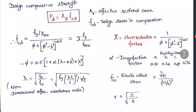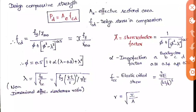For lambda, it is the non-dimensional effective slenderness ratio given as sqrt(FY / FCC), where FCC = pi²E / (KL/r)². This is called the elastic critical stress. The normal slenderness ratio is L/r, but here the formula is lambda = sqrt[FY × (KL/r)² / (pi²E)], and r is the radius of gyration equal to sqrt(I/A).